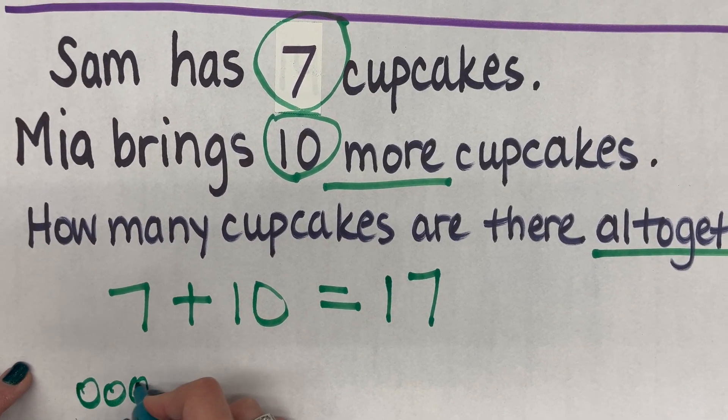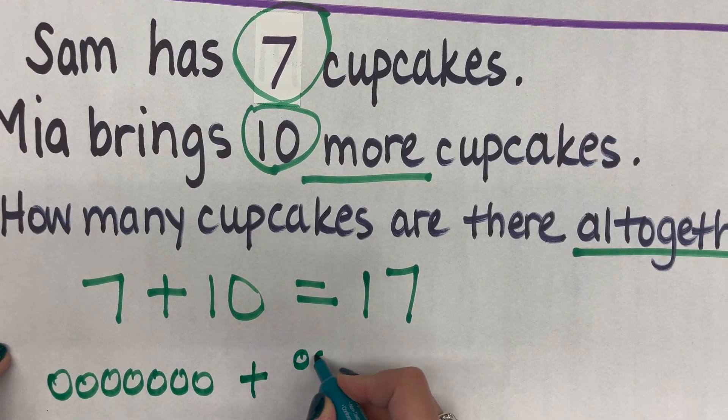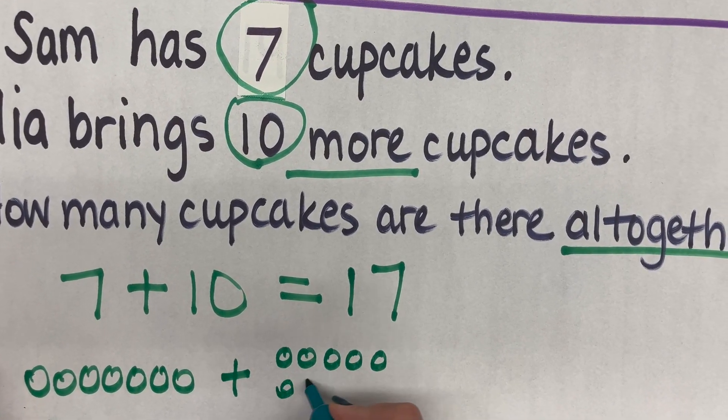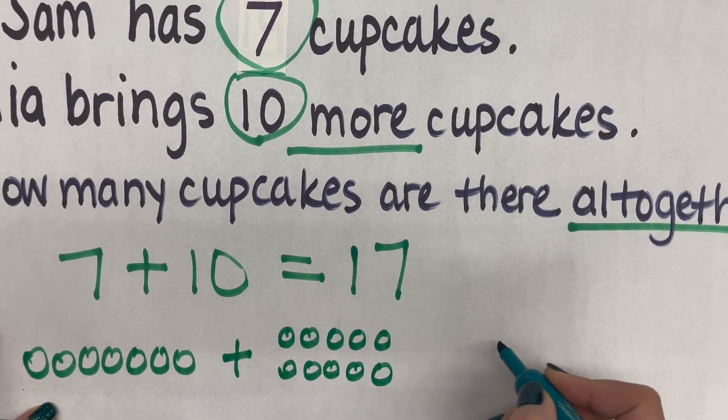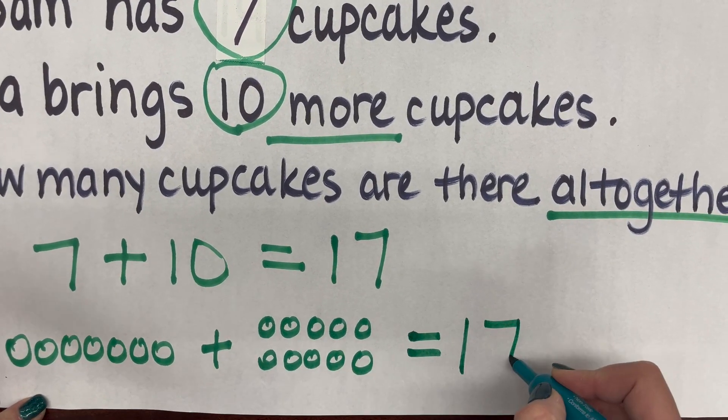So 1, 2, 3, 4, 5, 6, 7, plus and then 10 more here. Continuing to draw pictures for story problems at this level is absolutely fine.